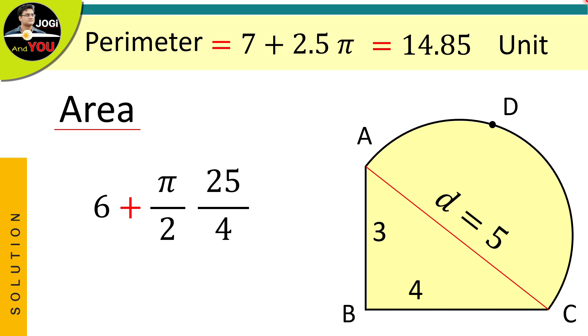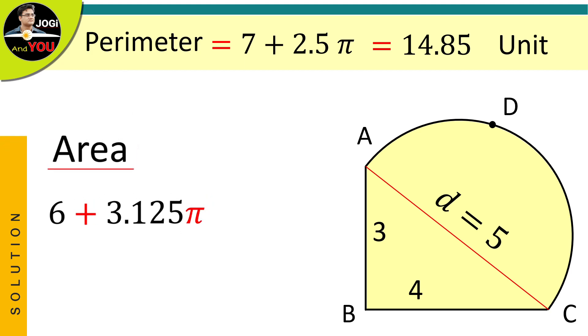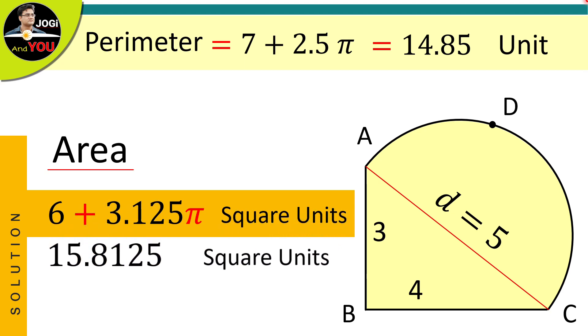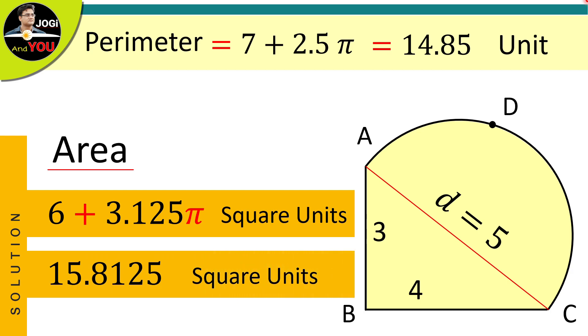And now, after calculation, we have 6 plus 25 pi by 8. And the final calculation is 6 plus 3.125 pi square units. And if you calculate it with the numerical value of pi, that is 3.14, then our answer will be 15.8125 square units.